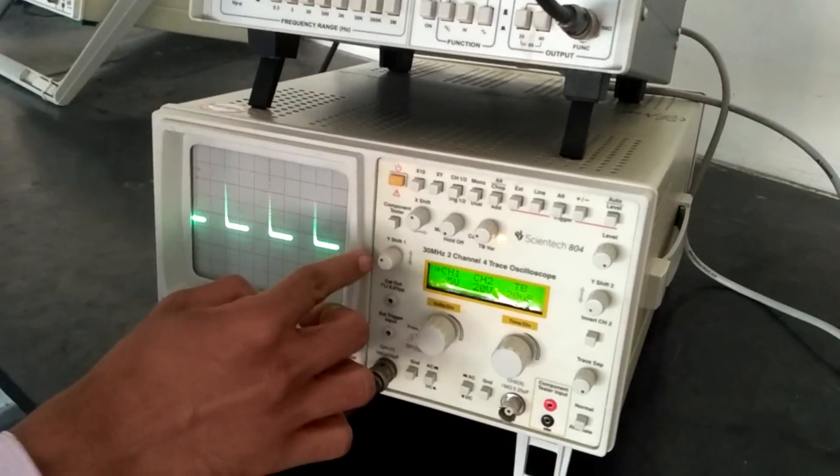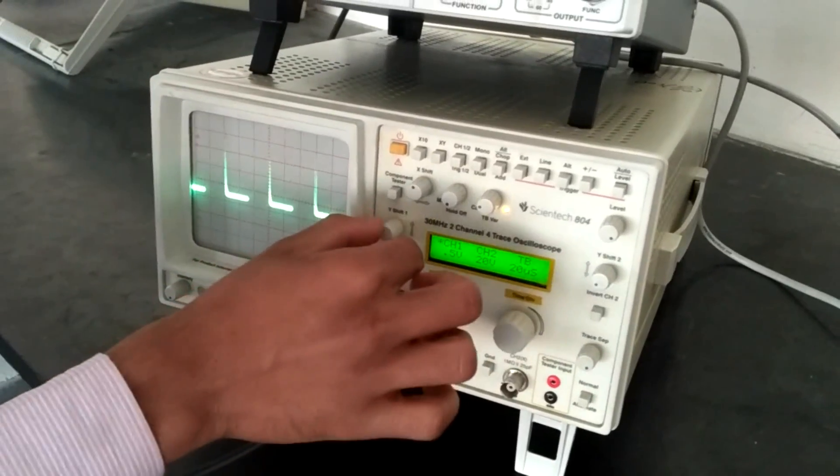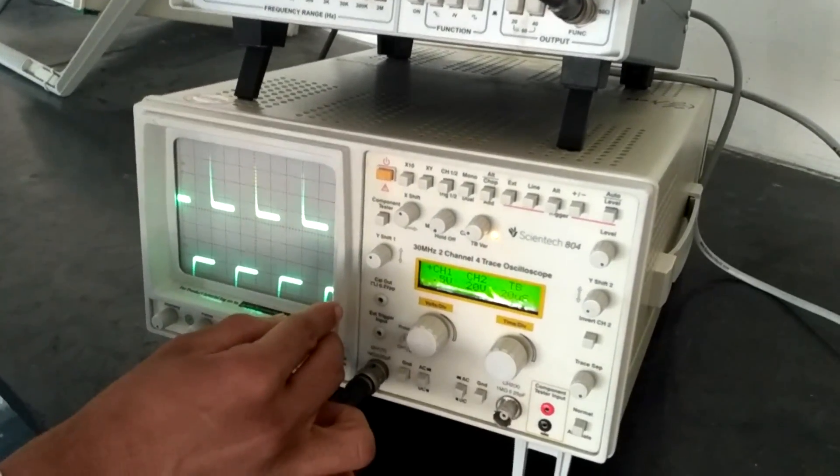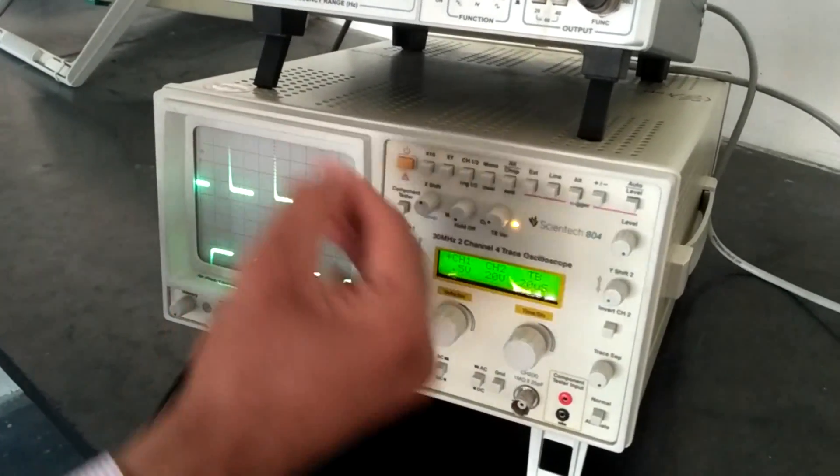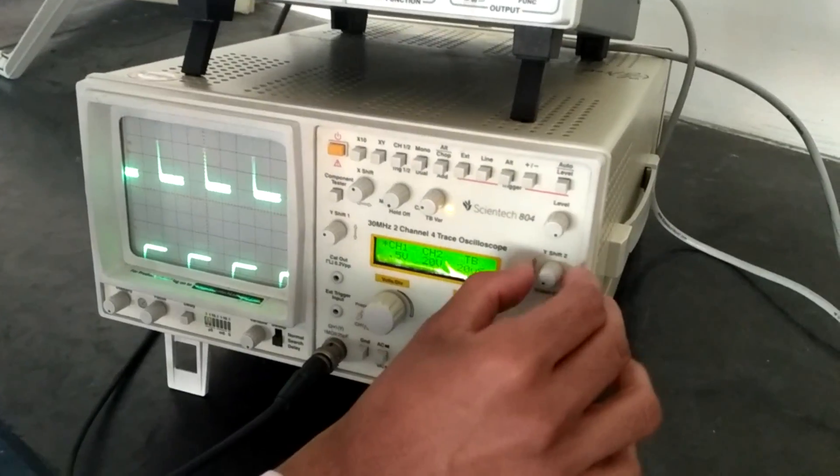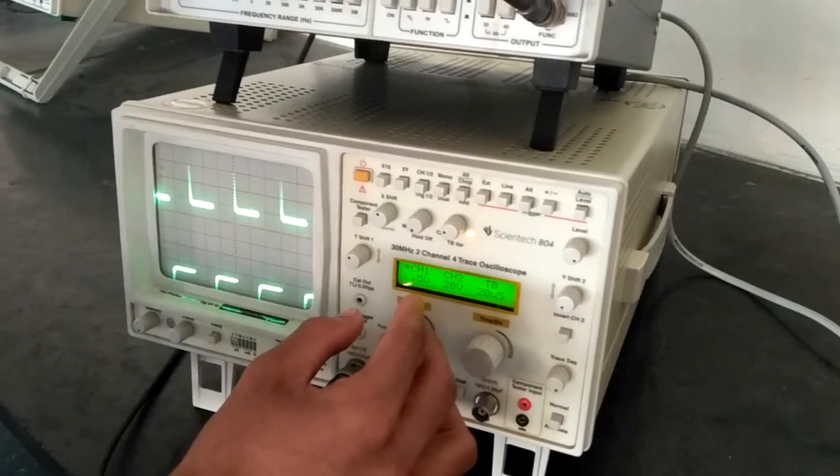This is Y-shift for channel 1. Here we have connected the CRO probe to channel 1. Hence we can use Y-shift 1 to change the Y-axis of the signal. In the same way there is Y-shift 2 for another signal if we take 2 signals at the same time.